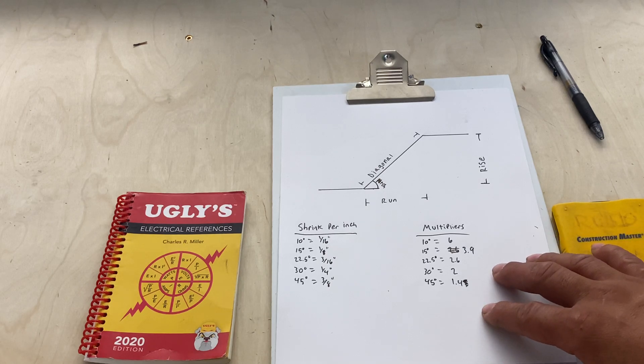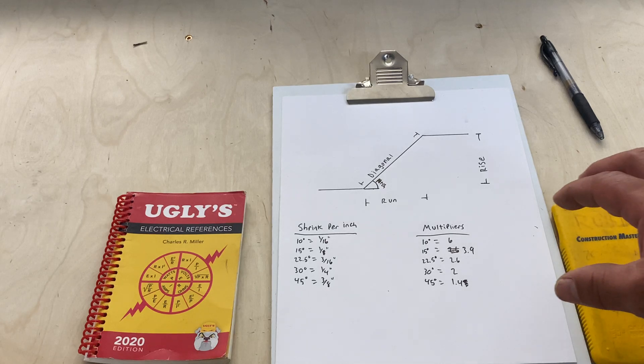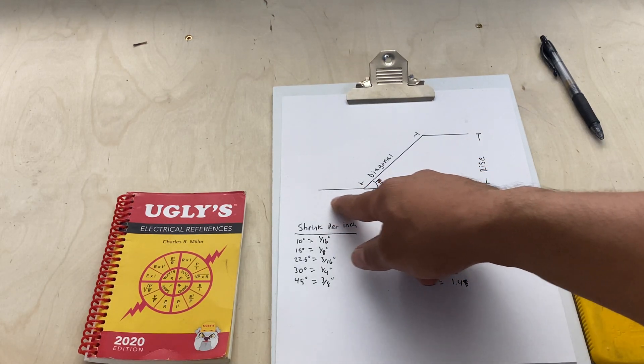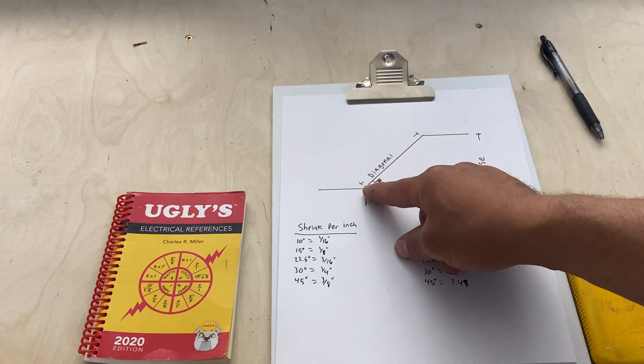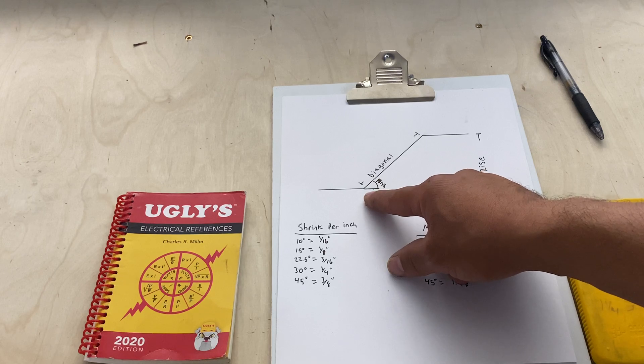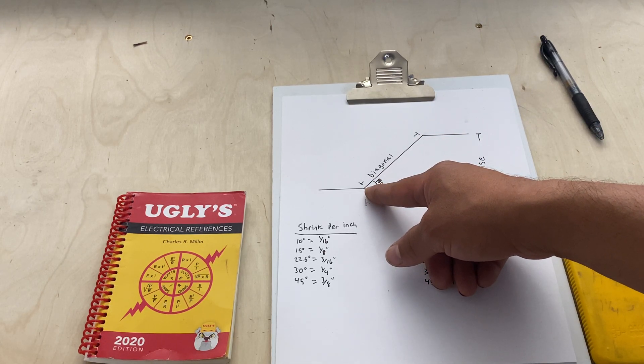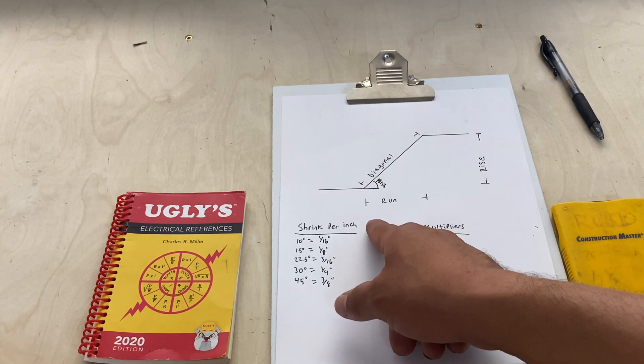The way I drew it out, this is an offset. You have your diagonal, which is your center-to-center measurements for your offset. From your first bend to your second bend, that's your diagonal.